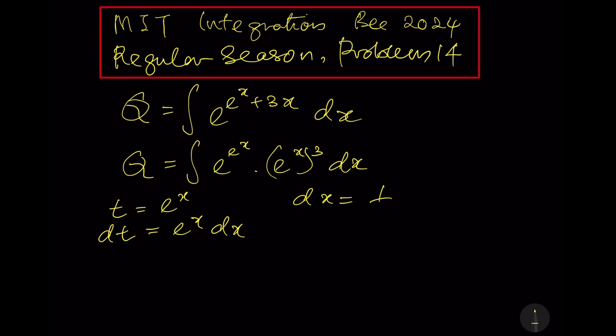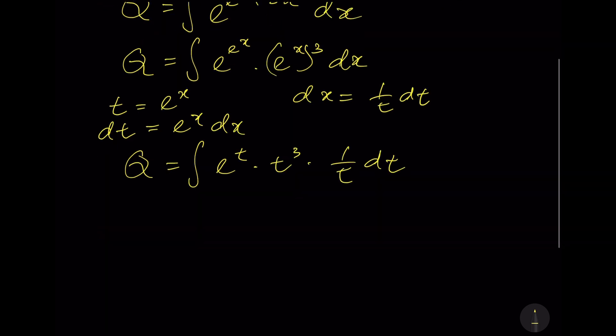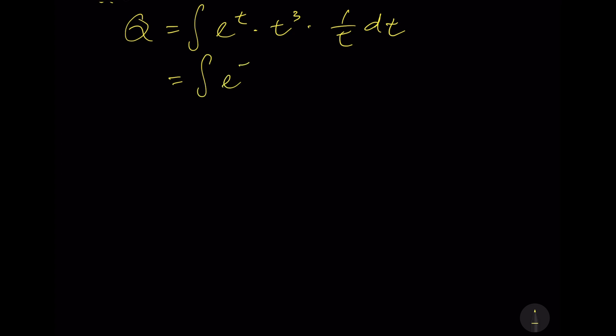Which means dx equals 1/t multiply dt. The integral becomes ∫e^t · t^3 · (1/t) dt. Obviously, t^3 and 1/t can be simplified to become t^2.